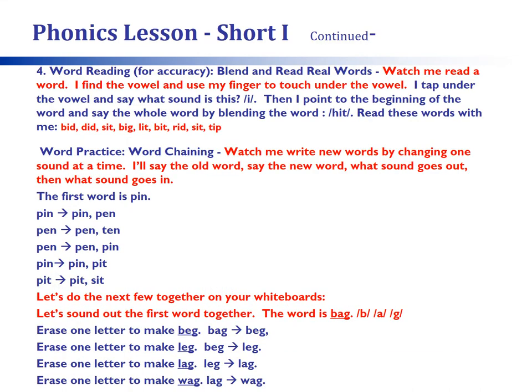Step 4 entails having students practice blending and reading real words, pointing to short vowel sounds to highlight critical features. It is hoped that your current reading program provides exercises similar to those on the slides and in addition provides practice for word chaining. Word chaining is an effective way for students to practice new words by changing one sound at a time to produce a new word. Several practice opportunities would be provided using explicit language patterns as shown on the slide.